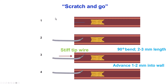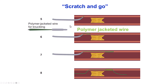For the scratch-and-go, we advance a workhorse guide wire close to the proximal cap, then advance the microcatheter. We take a stiff guide wire — the Confianza Pro 12 or Hornet 14 — with a steep 90-degree bend, and advance it barely into the wall of the vessel. This is critical: if the wire goes too far, there will be a perforation. After advancing the guide wire, we advance the microcatheter into the extra-plaque space and remove the stiff-tip guide wire. The next step is to advance a polymer-jacketed wire, which is pushed without rotation until it forms a knuckle. The knuckle is then advanced across the CTO, followed by re-entry distally.